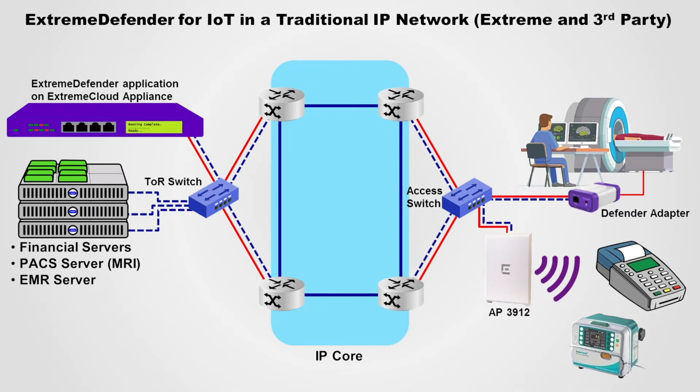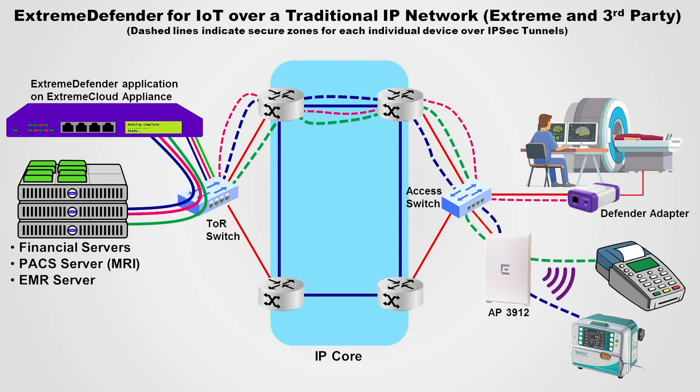When the extreme Defender solution is added to the network, it secures the devices by segmenting the traffic into individual zones. It can be deployed in any IP-based network, including networks built with non-extreme networks hardware. Extreme Defender enables the creation of secure zones by segmenting the device traffic using IPsec tunnels. It enables customers to securely deploy IoT without having to make any significant network changes.